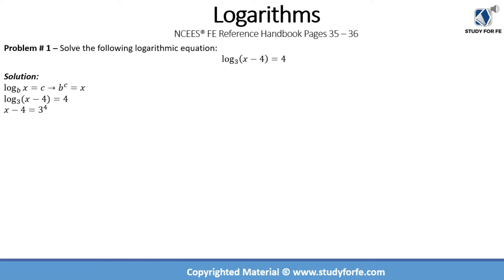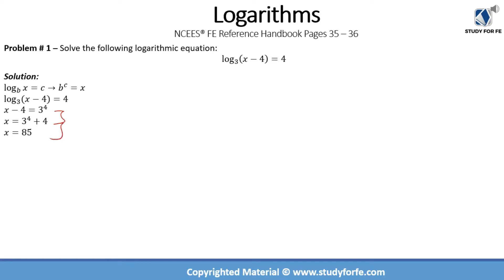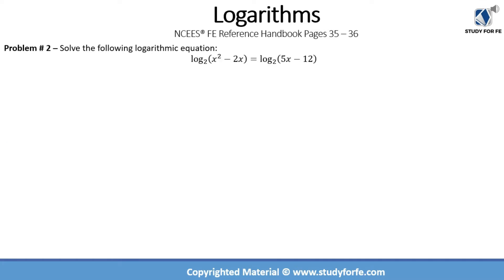According to the problem statement, we have log base 3 of (x minus 4) which is equal to 4. We raise the base to the power of this constant: 3 raised to power 4. Whatever you're taking the log of remains on the left hand side, so x minus 4 equals 3 raised to power 4. The next steps are pure math: x minus 4 equals 81, so x equals 3 raised to power 4 plus 4, which gives us x equal to 85.